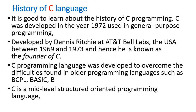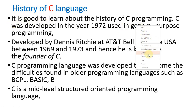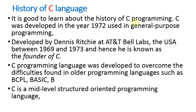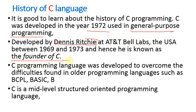Let us focus on some of the history. It is good to learn about the history of C language programming. C was developed in the year 1972 for general purpose programming. It was developed by Dennis Ritchie at AT&T Bell Labs. He is the founder of the C language.